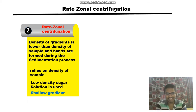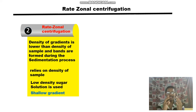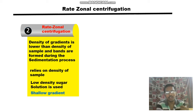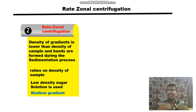One criterion for rate-zonal centrifugation is that the density of the gradient has to be lower than the density of the sample. That is why bands are formed during the sedimentation process.